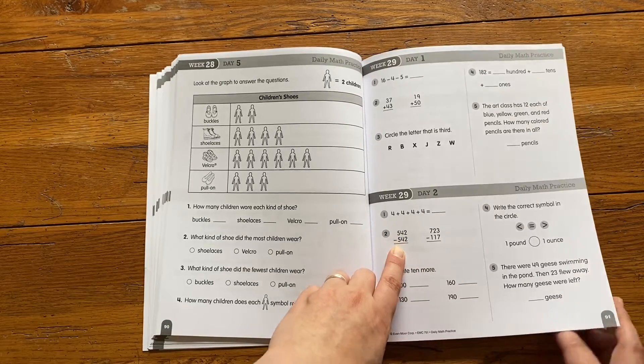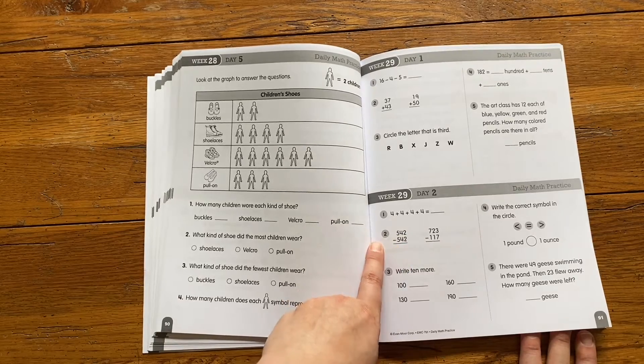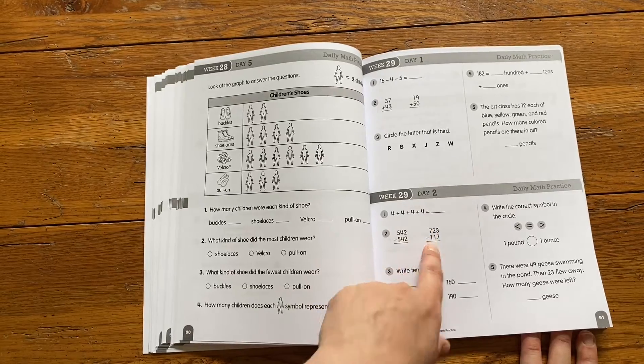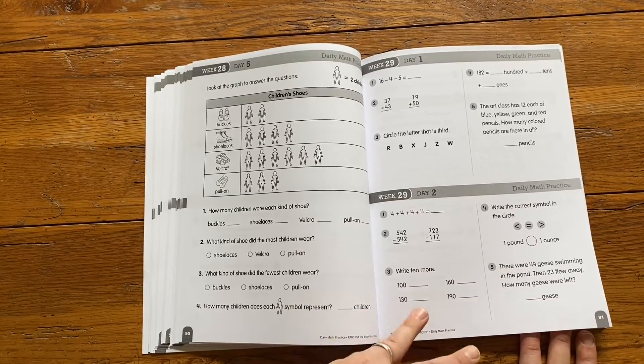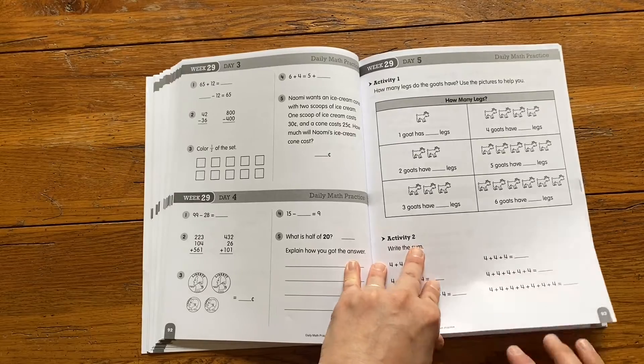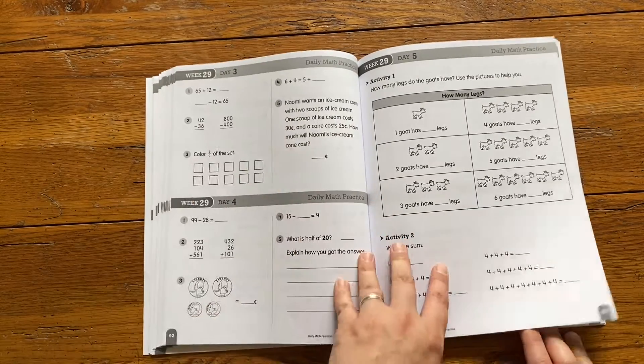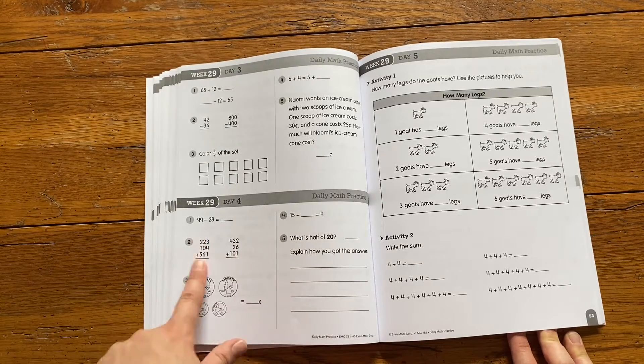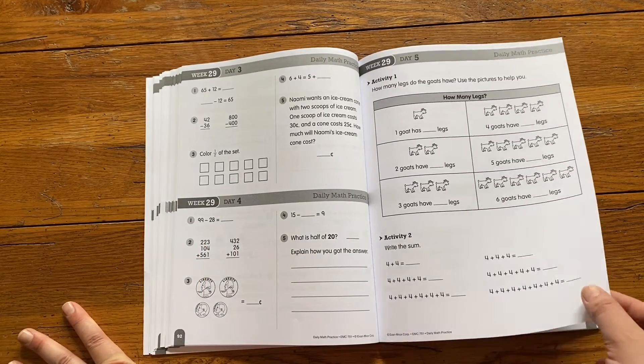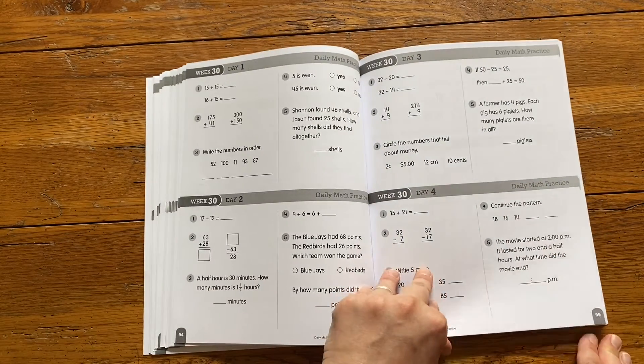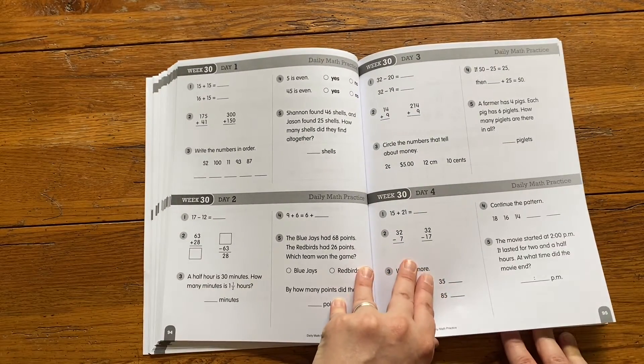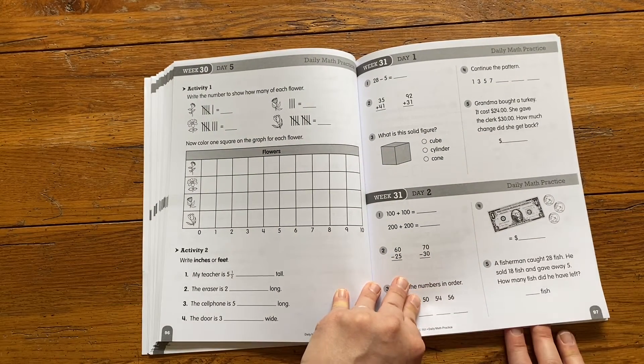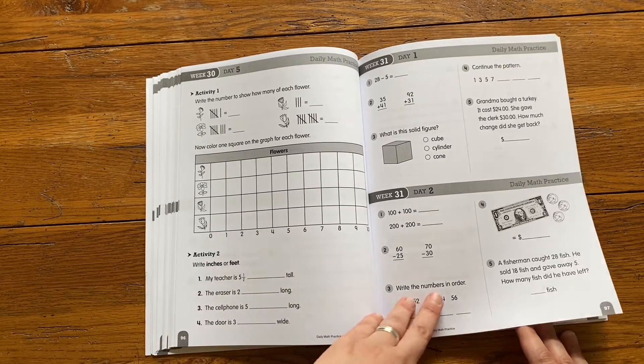We have not done three-digit subtraction yet. He has done three-digit addition, so he'll be able to do this one because he can very easily see that zero. He'll probably need some help with that one or we may just skip that one since we have not learned that yet. Same with here, it's getting a little bit bigger. Now he can do the addition. Right Start does a lot of addition in level B, just not a ton of subtraction.